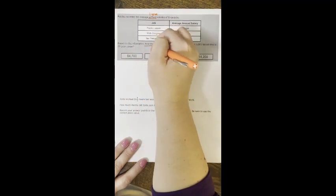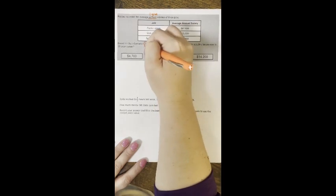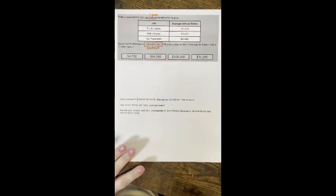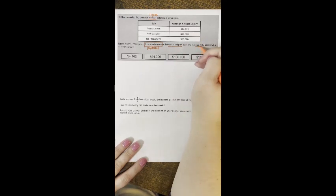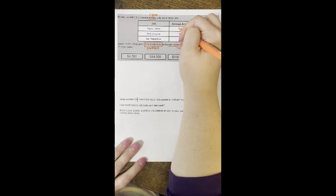The question says based on the information how much more. When you see the words 'how much more' that tells you we are subtracting. It says will a web designer make than a public liaison.